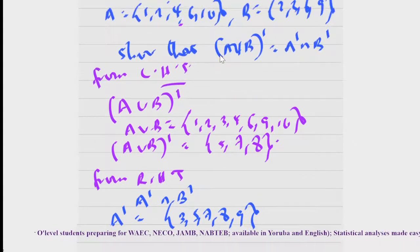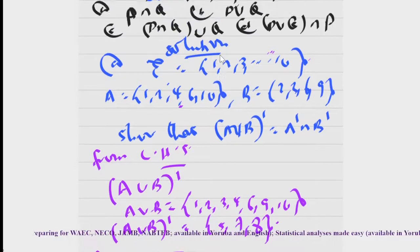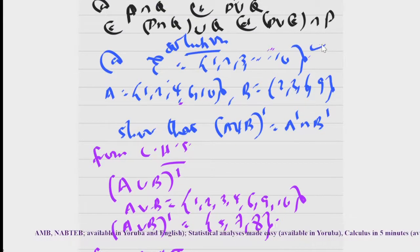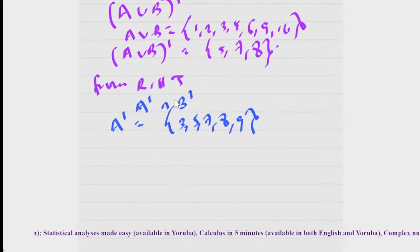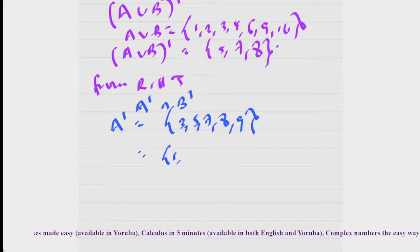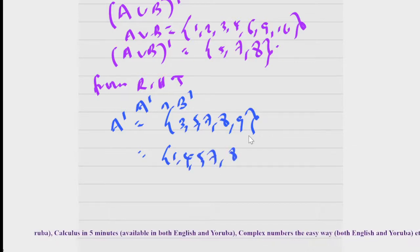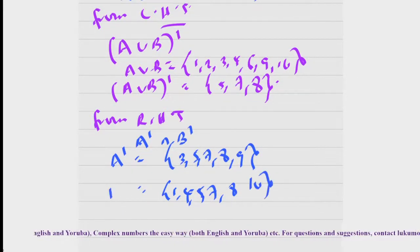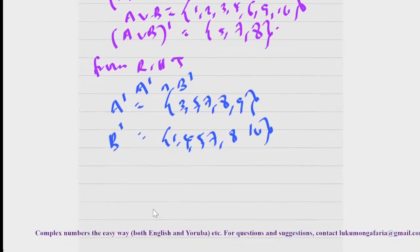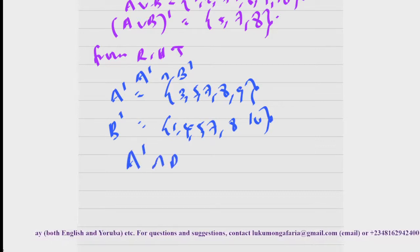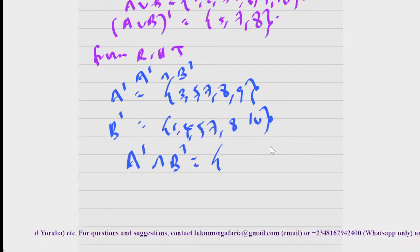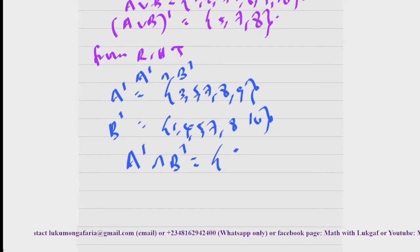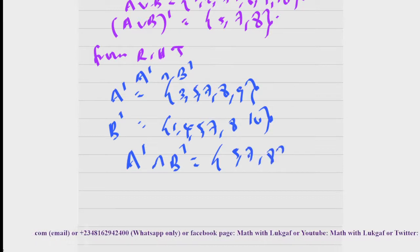And what of B complement? What is in the universal set that is not in B? That's {1, 4, 5, 7, 8, 10}. That is your B complement. Then you find A complement intersection B complement. What is the common element to both? That is five — five is here, five is here — seven, eight.